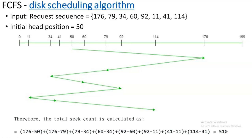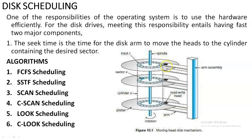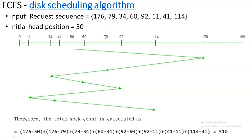The first one is FCFS — First Come First Serve. When you are going to attempt a problem in this scheduling algorithm, the question will give you the request sequence and the initial head position. The initial head position is nothing but from which point your arm is going to start rotating from. Here you can see a black color magnetic tape — this is the point where initially your disk arm starts from. This initial point will be given in the question and you are going to track or travel accordingly.